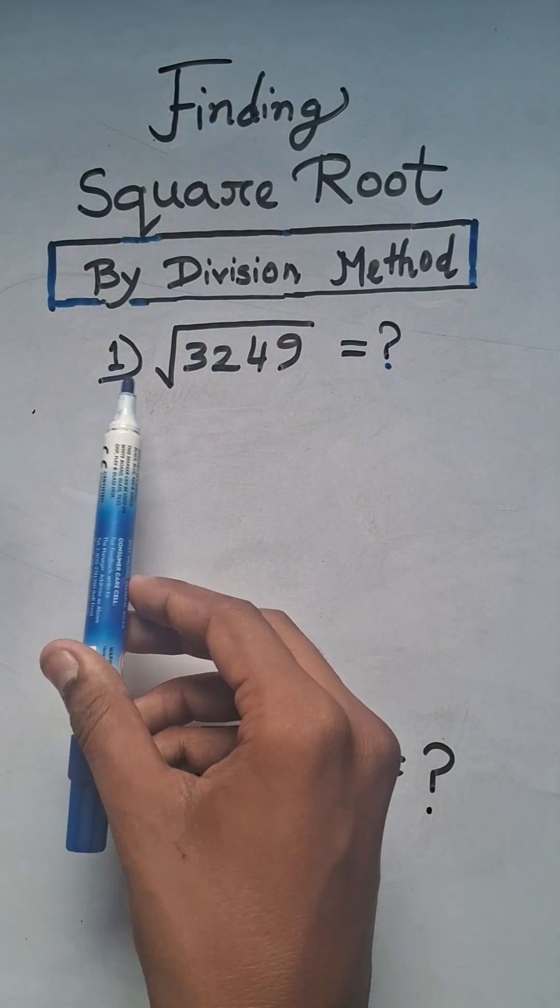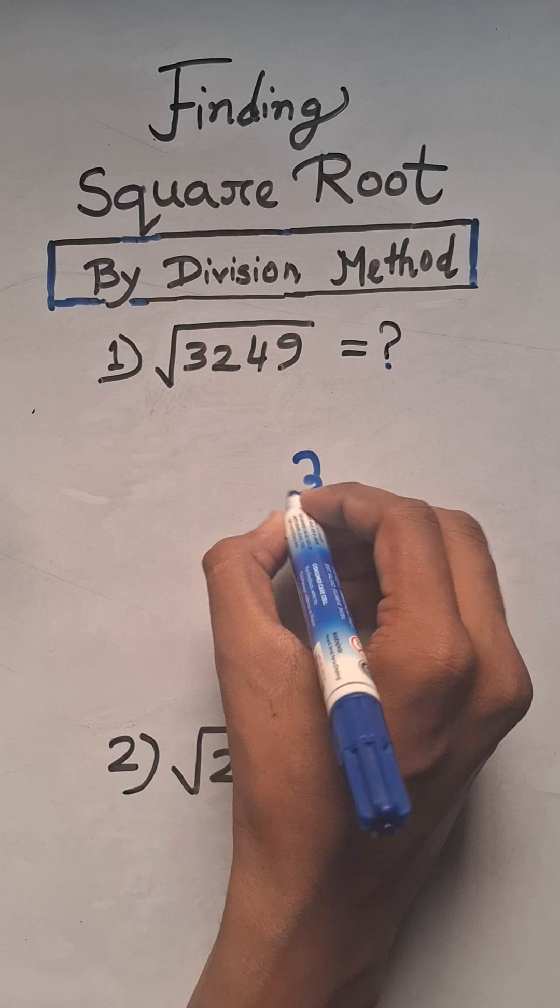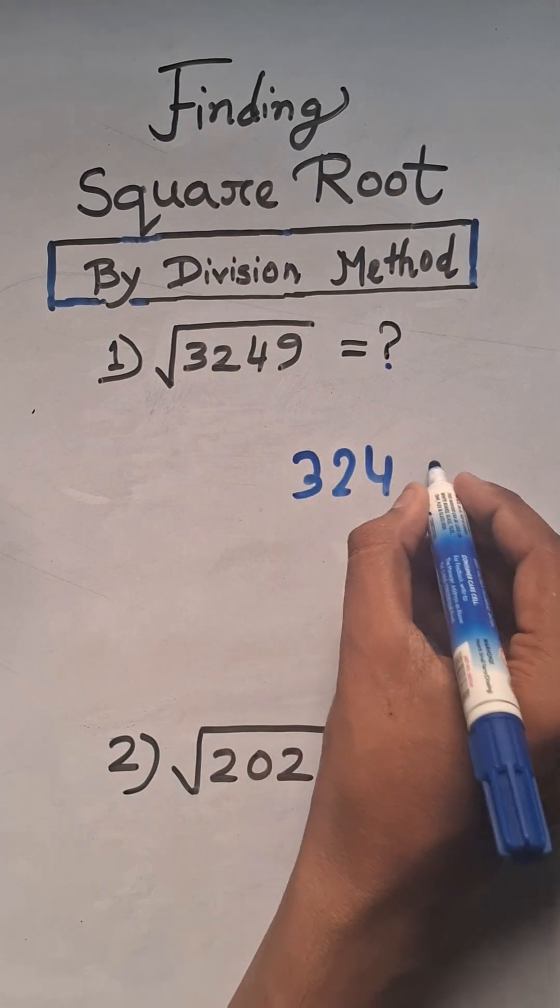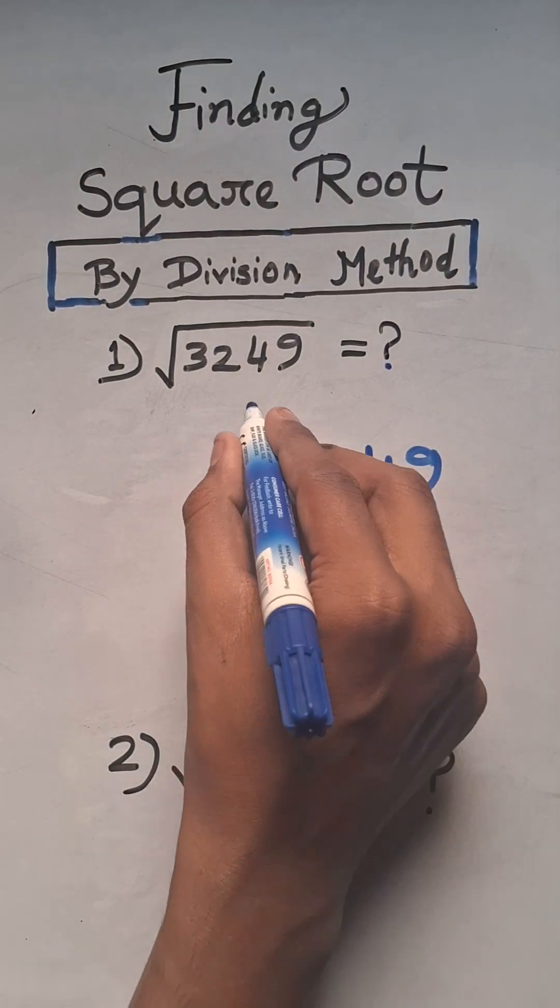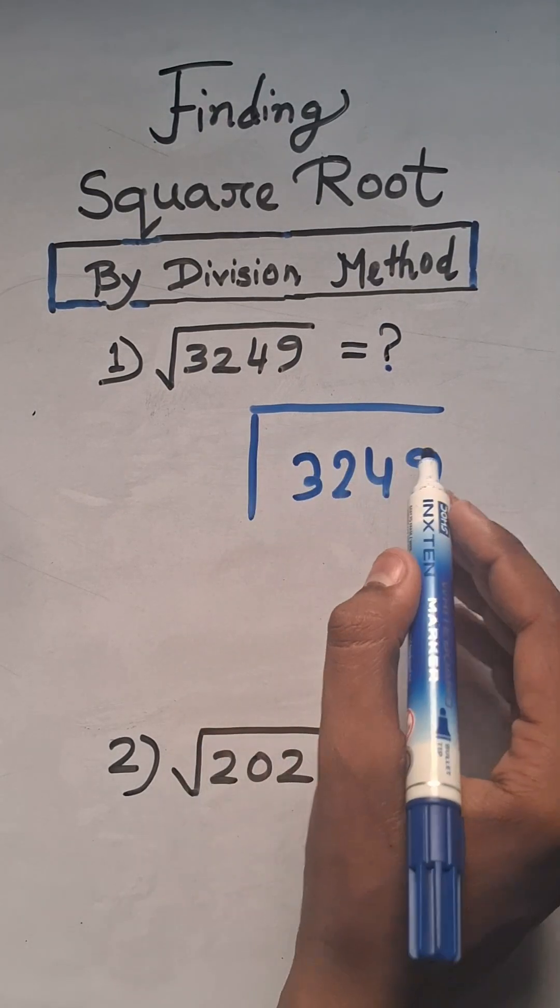How to find the square root of any numbers by long division method? Here is a question: 3249. Just write the number as division. Now we have to separate each two-digit numbers